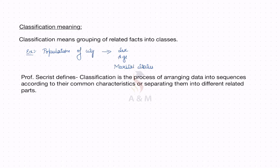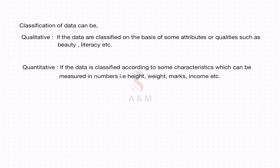Here there is a definition. Professor Secrist defines: classification is a process of arranging data into sequences according to their common characteristics or separating them into different related parts. Classification of data can be qualitative or quantitative. If the data are classified on the basis of some attributes or qualities such as beauty, literacy, etc., that is the qualitative one.